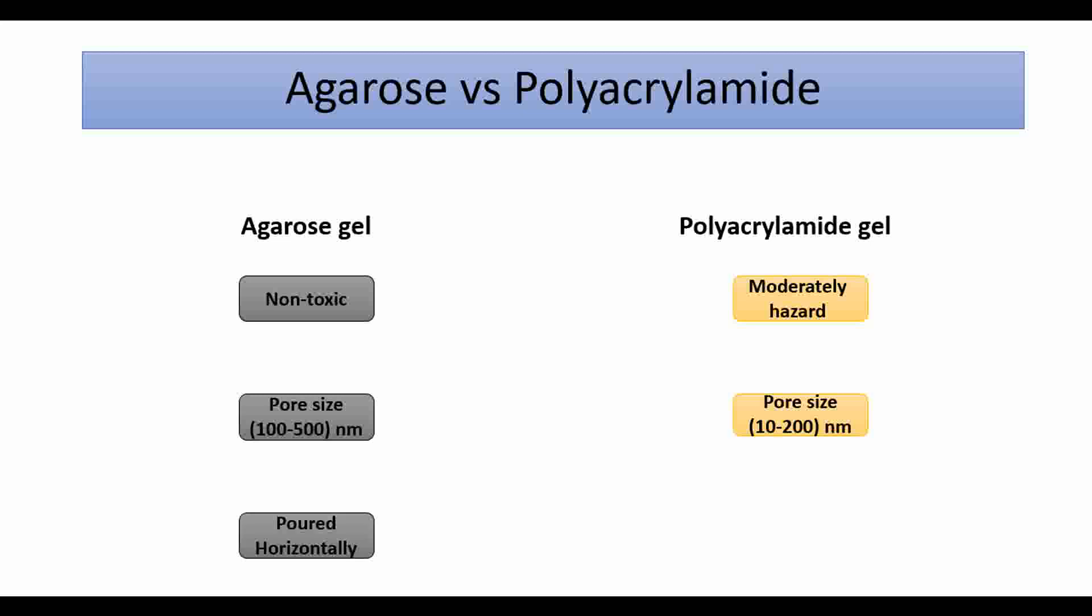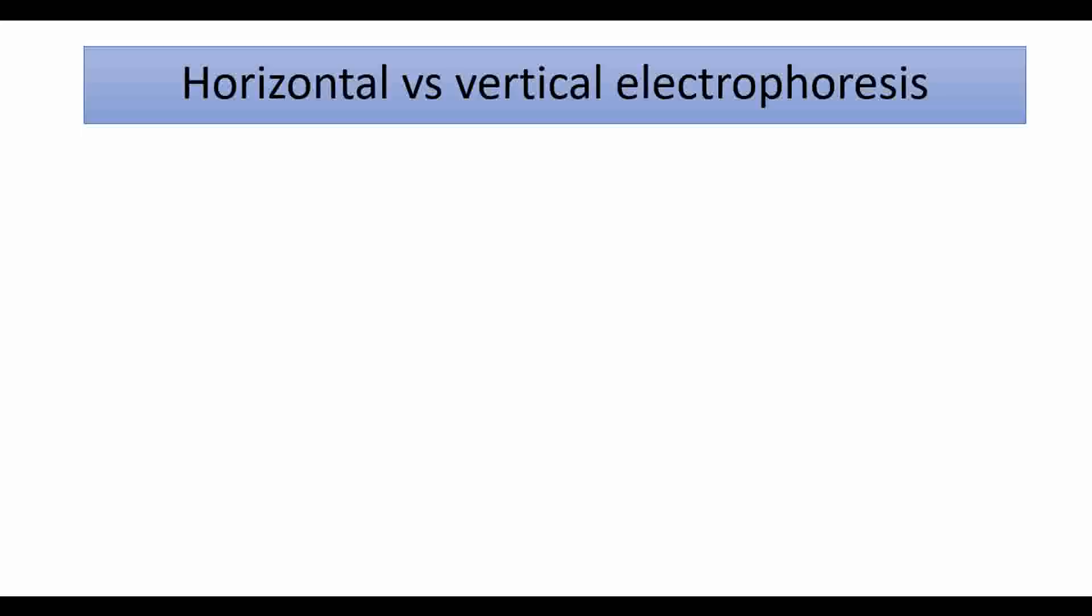Agarose gel is poured horizontally and polyacrylamide gel is poured vertically. This brings us to the next concept: what is the difference between vertical and horizontal gel electrophoresis?